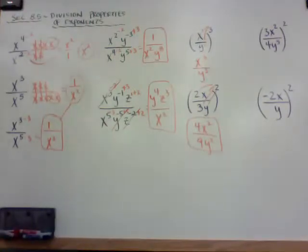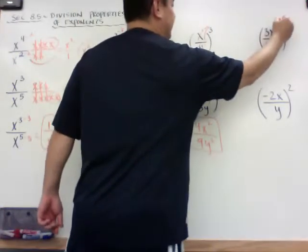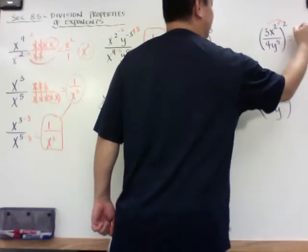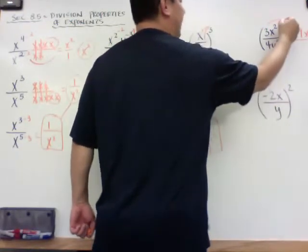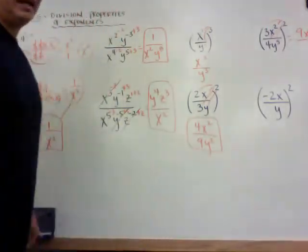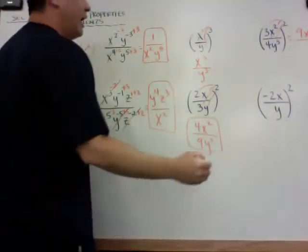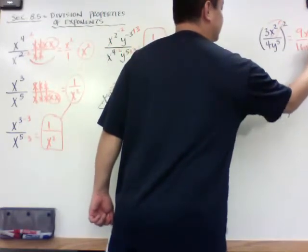I'll distribute that square into each one of those. Here's another one: if I take this in, on the top I'm going to get 9x to the 4th. And then on the bottom, when I distribute this in, I get 4 squared which is 16, and then y to the 5 times 2 is the 10th power.